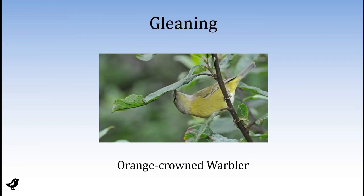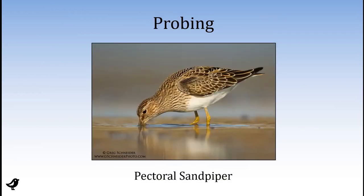One of the most common foraging behaviors is simply called gleaning, like this orange-crowned warbler you see here. This is when a bird just hops around on the branches, peering under leaves, over leaves, into little cavities, basically looking everywhere it can to find a caterpillar, some insect eggs, a spider, or some other bug typically trying to hide from being predated by a bird. These birds are pretty much constantly looking for food during the day. Probing is another really big strategy — a lot of shorebirds like the pectoral sandpiper probe into the mud and sand under the water. They can't see what's down there, so they rapidly check with their bills, and when they hit something, they gobble it up.